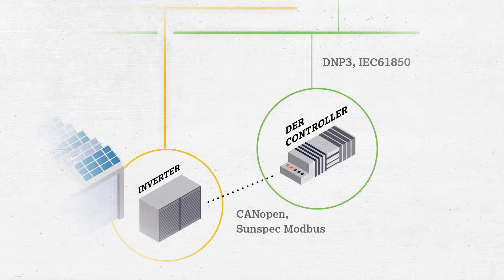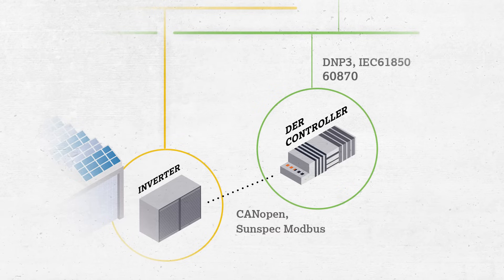The flexibility of the WAGO platform allows users to securely communicate northbound with protocols such as DMP3 or 6870. And for southbound communications, users can use SunSpec Modbus 700, CANOPEN, OPCUA, or other industrial protocols.